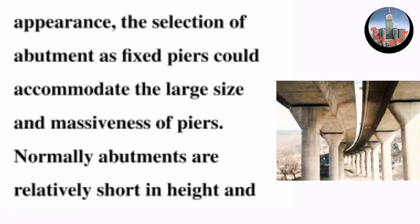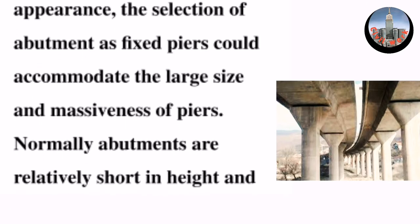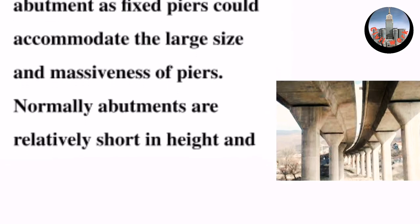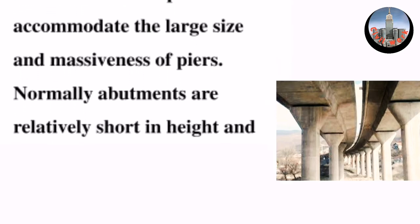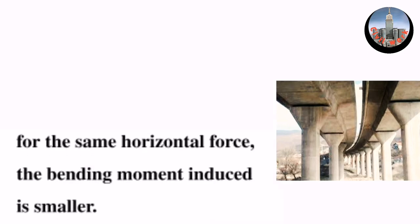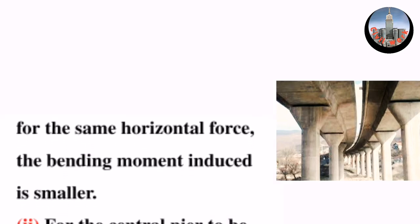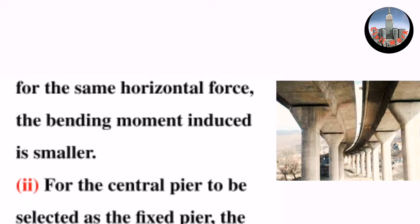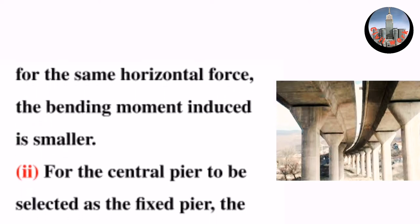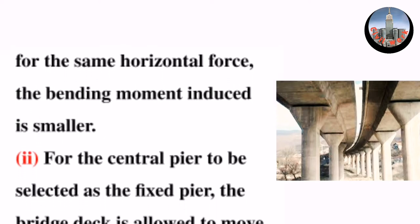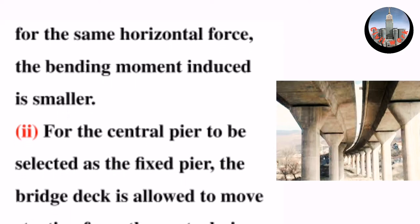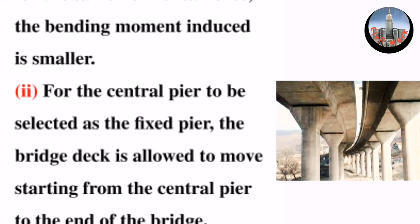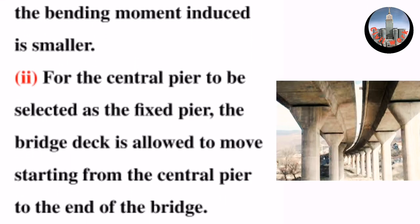Normally, abutments are relatively short in height, and for the same horizontal force, the bending moment induced is smaller. For the central piers to be selected as the fixed pier, the bridge deck is allowed to move starting from the central pier to the end of the bridge.